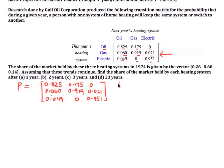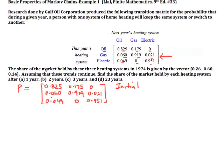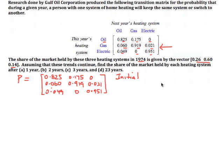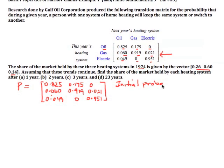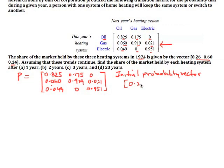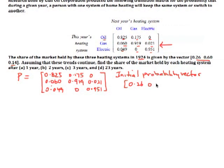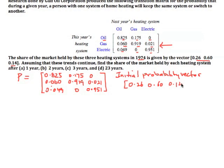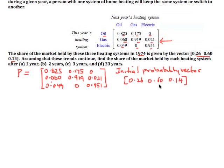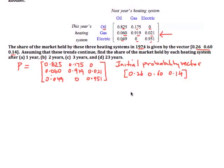Now we have an initial starting position. The share of the market held by these three heating systems in 1974 is given by this vector. Our initial probability vector is 0.26, 0.60, and 0.14. In other words, in 1974, 26% used oil, 60% gas, and 14% electric.